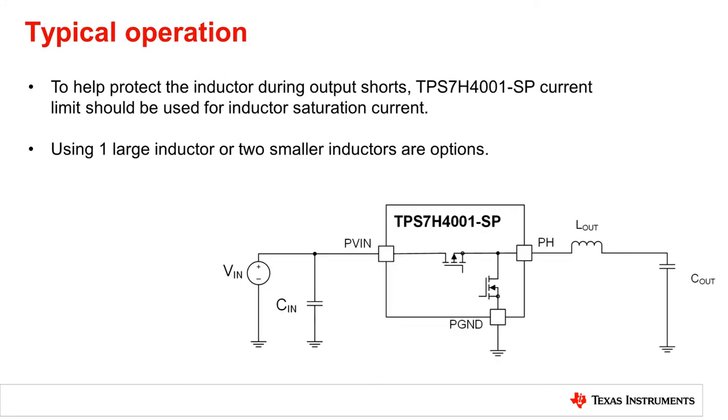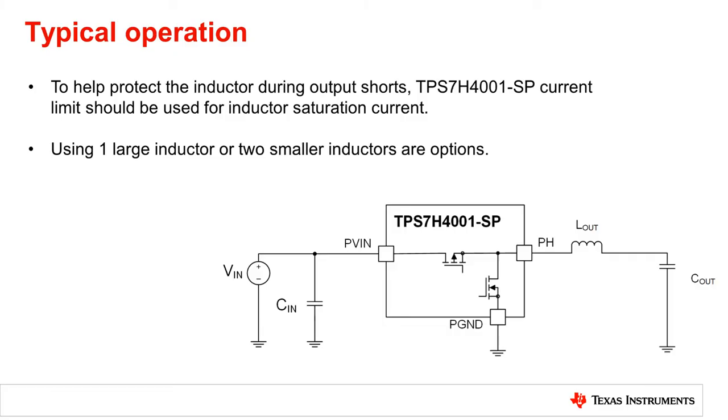In summary, to protect the inductor during short circuit events, the saturation current of the inductor should be greater than or equal to the high side current limit of the TPS7H4001-SP. Either one inductor with a saturation current of 32 amps can be used or multiple inductors with lower saturation current value.